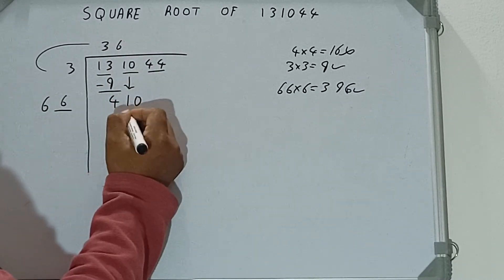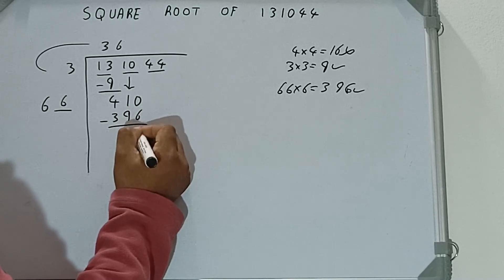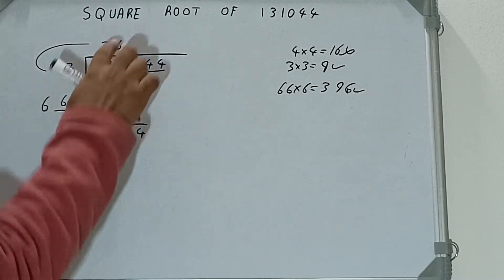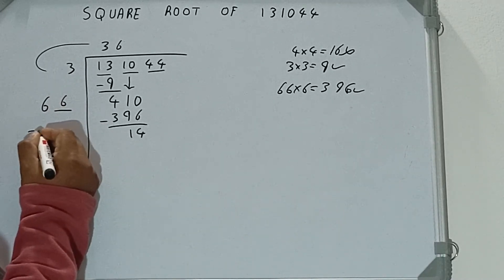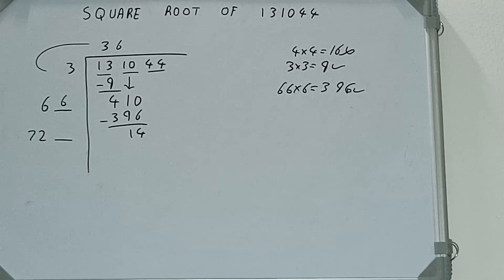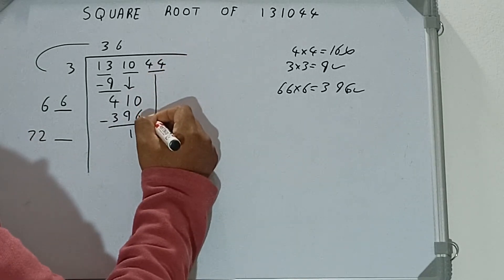396 subtract, 14 will be left. Now 66 into 6 we did, so add both. So 66 plus 6 will be 72, and keep a digit extra. And this number we need to make it big, so bring the next pair down.